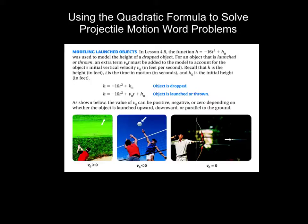If you remember back in section 4.5, we used the formula h equals negative 16t squared plus h naught. This formula was used to model an object dropped from a certain initial height h naught, after a certain amount of time t, where h is the object's height after it is dropped, and negative 16 represents the effect of gravity on an object coming towards the center of the earth.